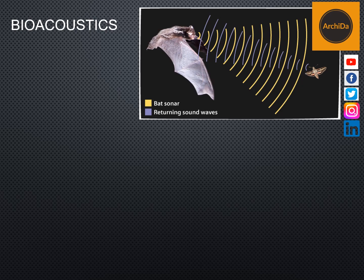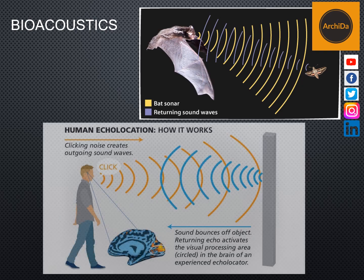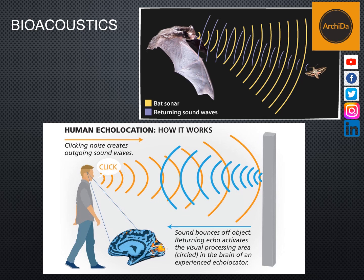Human echolocation is the ability of humans to detect objects in their environment by sensing echoes from those objects by actively creating sounds — for example, by tapping their canes, lightly stamping their foot, snapping their fingers, or making clicking noises with their mouths. People trained to orient by echolocation can interpret the sound waves reflected by nearby objects, accurately identifying their location and size.